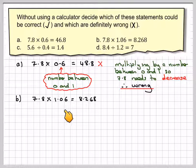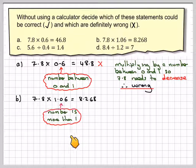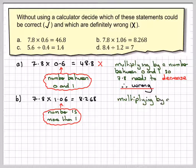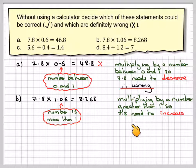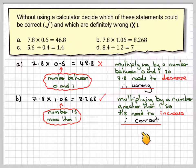7.8 times 1.06 is equal to 8.268. This number is more than 1. And the rule is if we multiply by a number more than 1, greater than 1, 7.8 would need to increase, it does. So this one could be correct. So I'm going to put down correct.